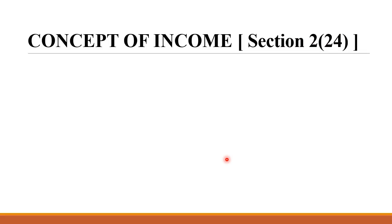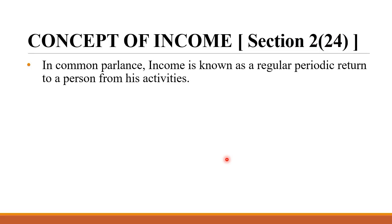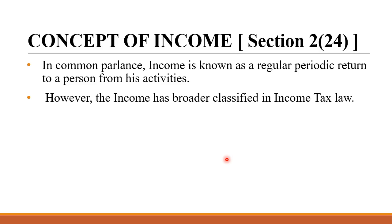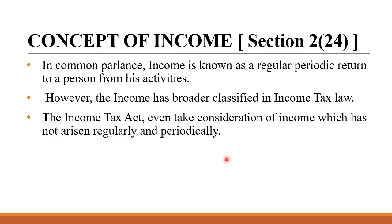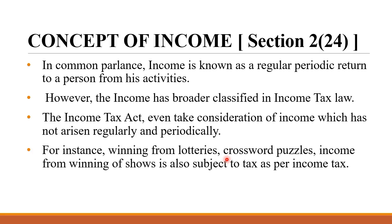The next concept we need to learn is 'income' under section 2 subsection 24. In common parlance, income is known as a regular periodic return to a person from his activities — whatever you earn is nothing but income. However, income is more broadly classified in income tax law. The income tax act even takes into consideration income which has not arisen regularly and periodically. For instance, winnings from lotteries, crossword puzzles, income from winning of shows is also subject to tax. So any consideration in the form of rupees, which you get regularly or irregularly, is termed as income under the income tax act.